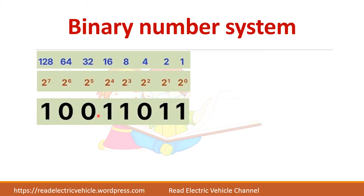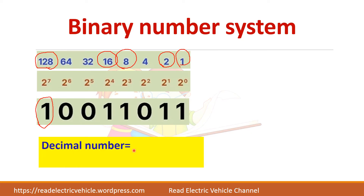Now let us convert this binary number to decimal. It is a very easy method. The 1 in the MSB position has an equivalent value of 128, so 1 into 128. The next two bits are 0, so leave them. Then 1 into 16, plus 8, plus 2, plus 1. This equals 155. So this binary number is equivalent to 155 in decimal.